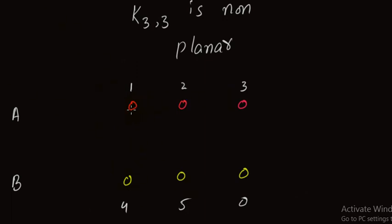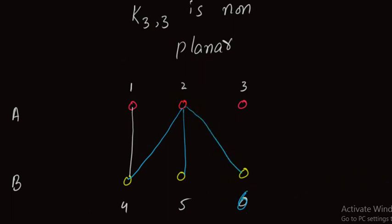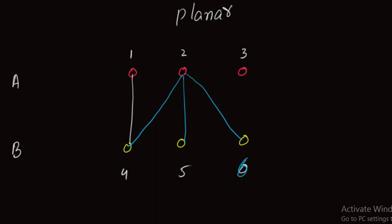First I join vertex 1 with vertex 4. Similarly I join vertex 2 with vertex 4, vertex 2 with vertex 5, and vertex 2 with vertex 6. We can join 2 and 6 without edge crossing. Up till now there is no edge crossing. Similarly, I can join vertex 3 and vertex 6. Now vertex 2 is connected to all 3 vertices of set B: vertex 4, vertex 5, and vertex 6.